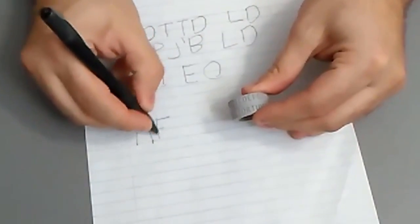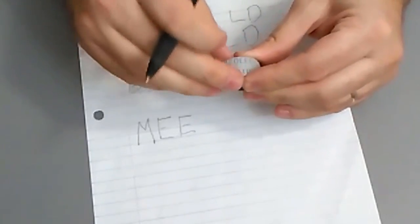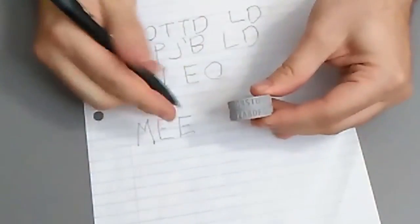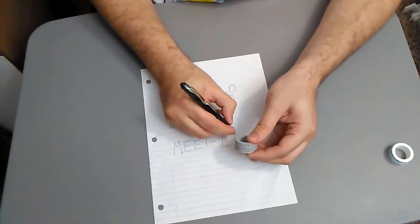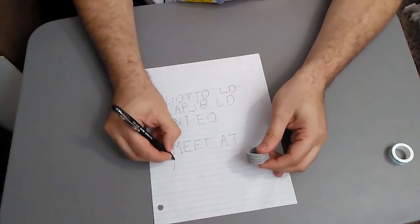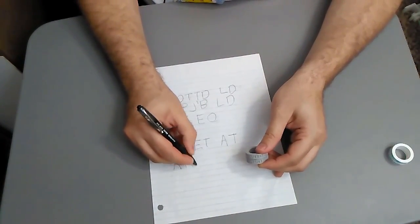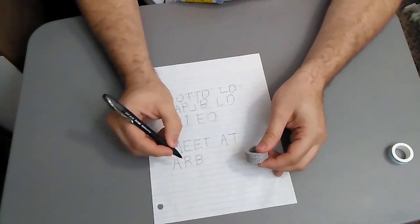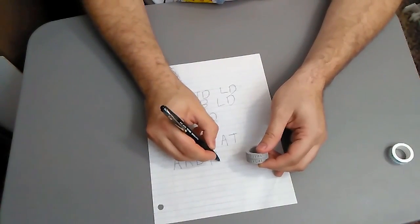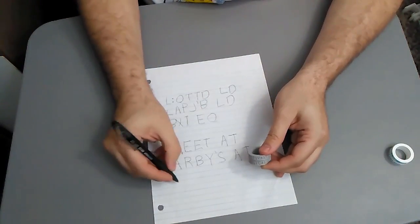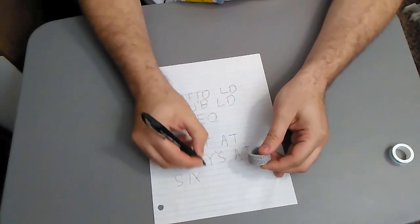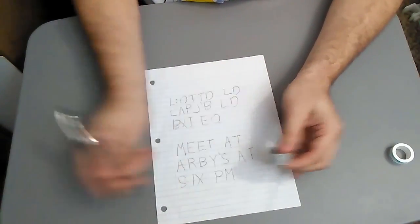And then they find the T, and they write the letter above it, E, E. And then they find the D on the bottom ring, and they write the T above it. And they keep going in this way, writing the message letter by letter, until they get the secret message written out. And they know that you want to meet them at Arby's at 6 p.m.